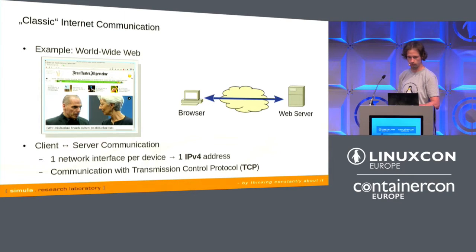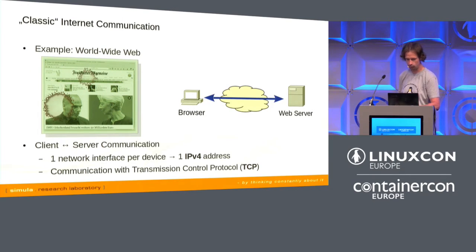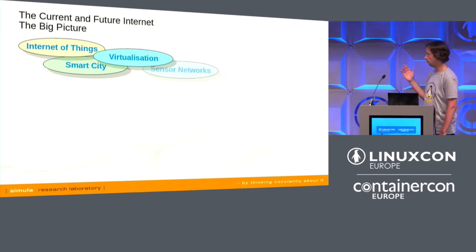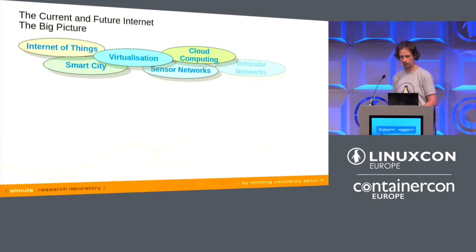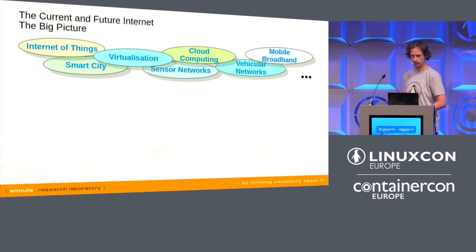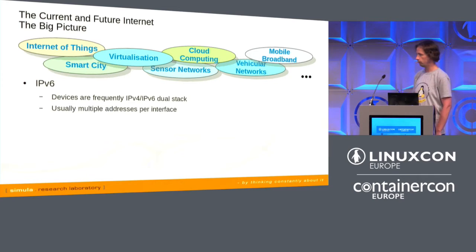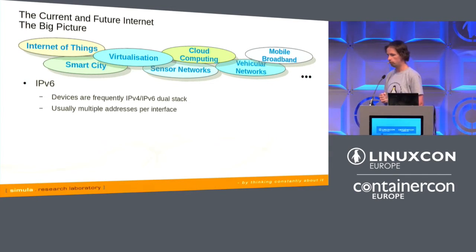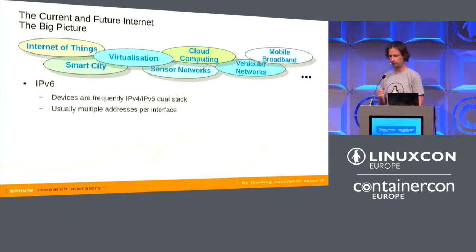In the future we will have many new applications — for example, internet of things, smart cities, virtualization, sensor networks — and these applications have stronger requirements on communication. Nowadays and in the future, we will have widespread support for IPv6. Usually today devices are already IPv4/IPv6 dual stack, so you typically have multiple IP addresses per network interface.